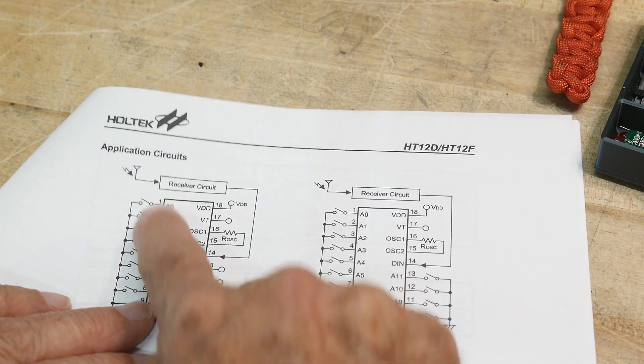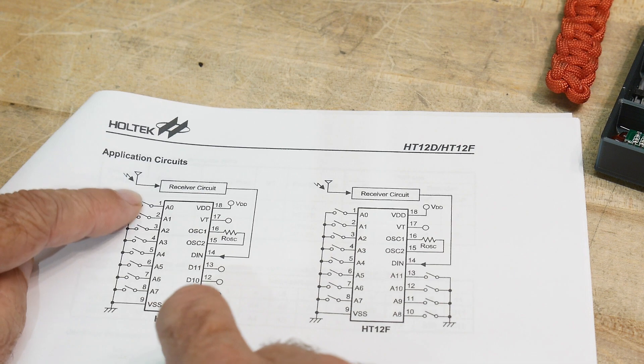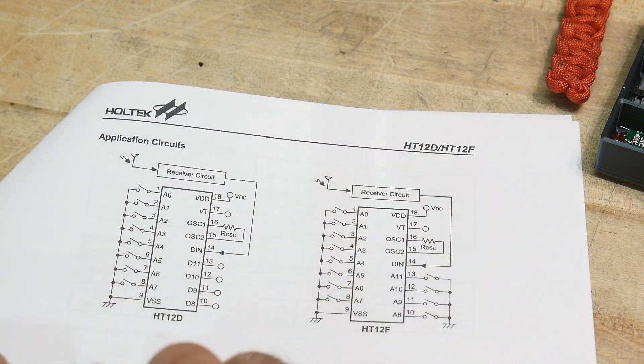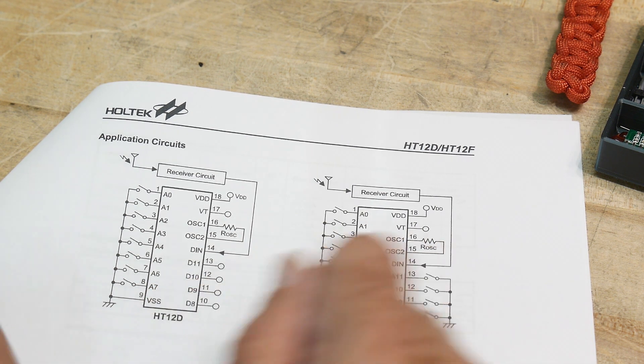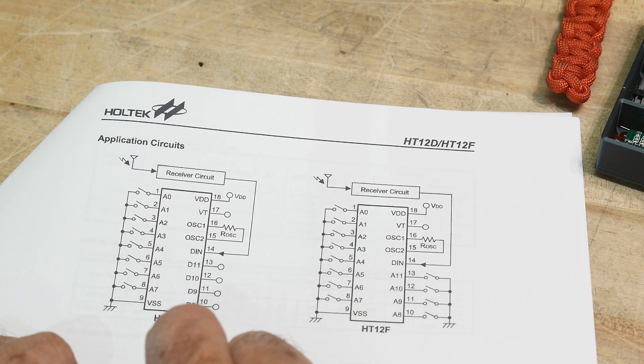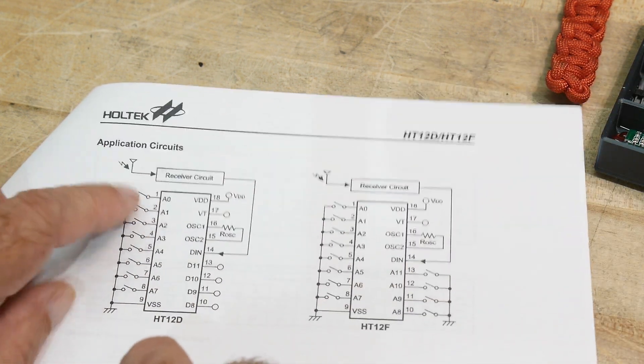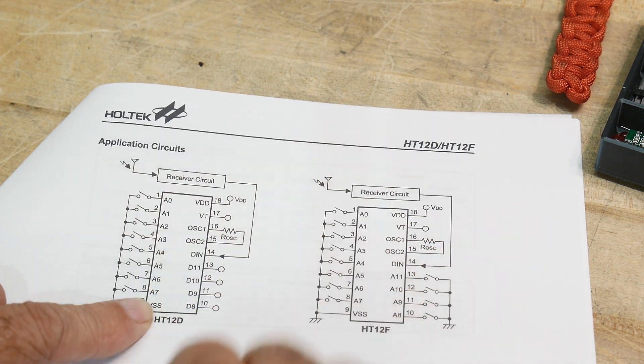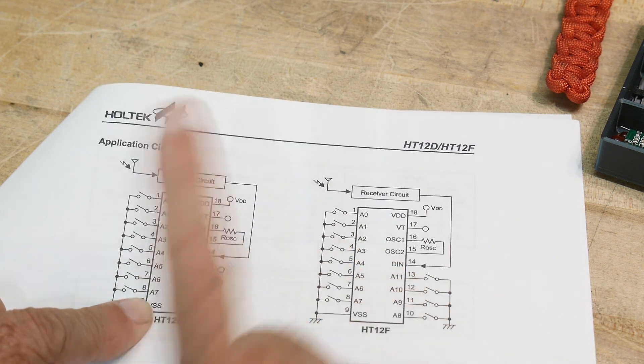It takes that serial stream in and it's going to do a couple of things with it. First of all, it's going to compare the first eight bits with these switches and the first eight bits of the string have to match the switch settings here. So that's the secret part. That's the encoding so that it's encoded that nobody else can hack you.